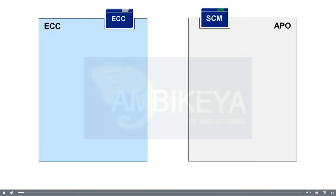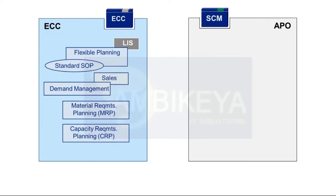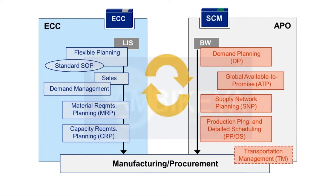In previous solutions, supply chain planning was divided into several steps that can be executed by various components in ECC or APO. It was possible and advisable to integrate these two systems and use both for planning. The Core Interface, or CIF, was used to integrate the systems.